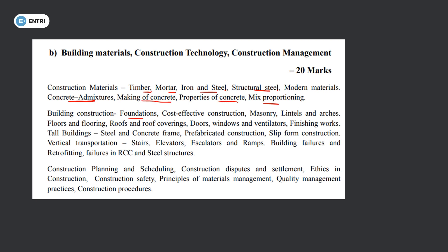Building construction covers foundations: different types — shallow foundation and deep foundation. Cost-effective construction, masonry, lintel, arches, floors and flooring, roof and roof covering, doors, windows, ventilators. Finishing work: plastering, pointing, painting. Tall buildings — steel and concrete framework. Prefabricated construction, slip form construction. Vertical transportation: elevators. Building failures and retrofitting techniques for RCC and steel structures.